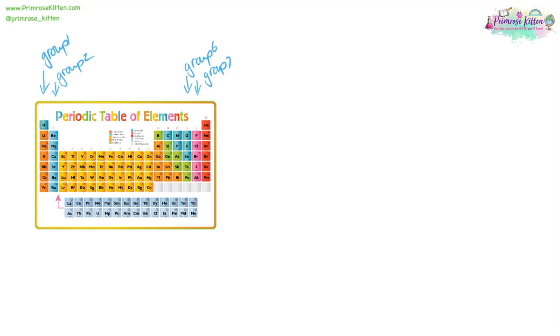The periodic table gives us loads of information. The first bit of information it gives us are about groups. Groups go down the periodic table: group one, group two, three, four, five, six, seven, eight, or group zero. Groups tell us the number of electrons on the outer shell. So things in group one are going to have one electron in the outer shell. Things in group two are going to have two electrons in the outer shell. Group six, six electrons in the outer shell. Group seven, seven electrons in the outer shell.